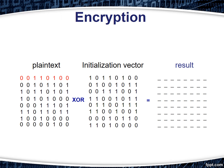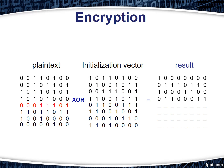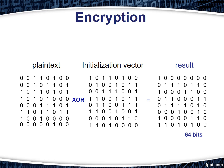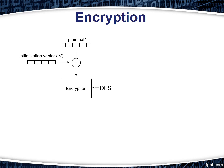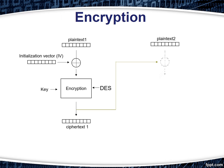First, the plain text is XOR'd with the initialization vector IV. Once that process is done, it is sent to DES to produce cipher text I. Following that, cipher text I is used as an initialization vector for plain text II and sent to DES to produce cipher text II. This process continues until all the plain text has been encrypted.